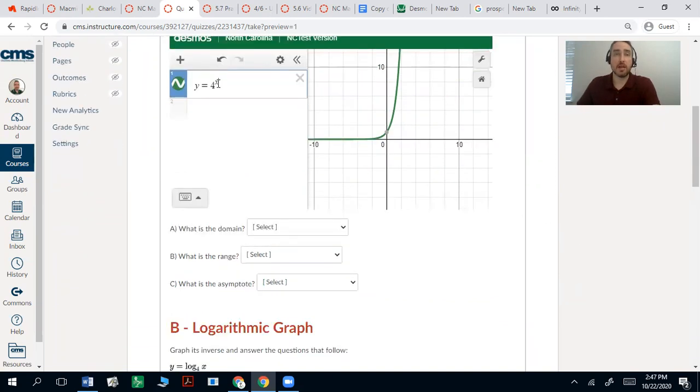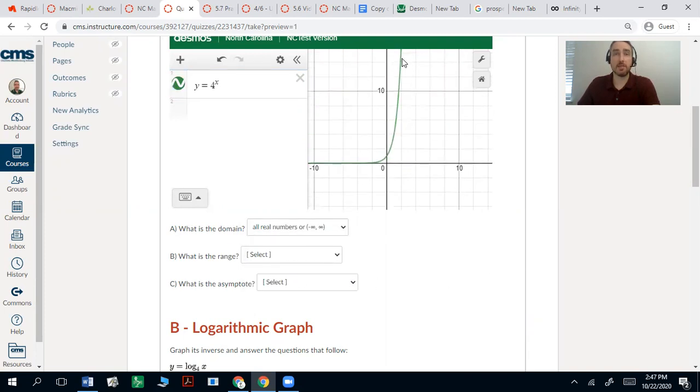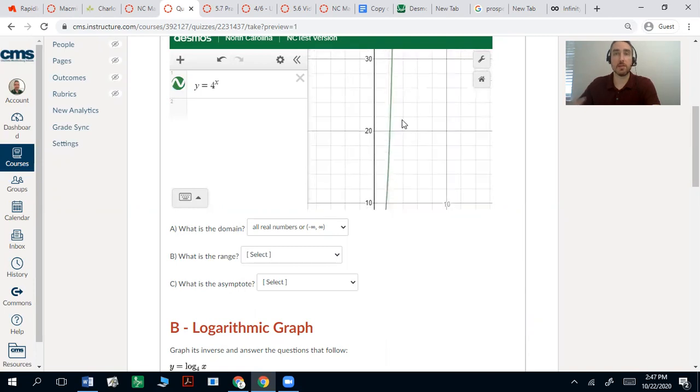You can plug in any number for your exponent, so its domain will be all real numbers. And it does look like it seems to sharply turn and go straight up,